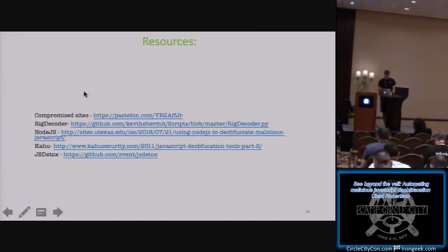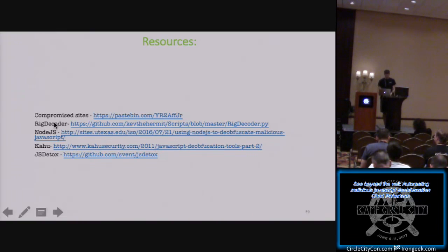The pastebin of compromised sites mentioned earlier is linked in the slides. Kev the Hermit has a Rig decoder on GitHub, though it didn't work on the sample I had — these scripts need updates when the landing page changes. There's also another Rig decoder on Git if you search for it, and Node.js tooling for deobfuscation automation, plus a couple other resources listed at the end of the presentation.